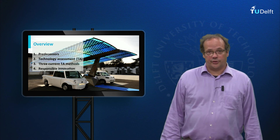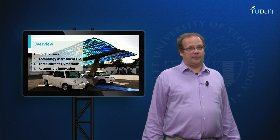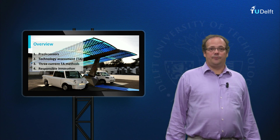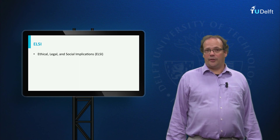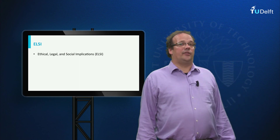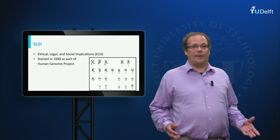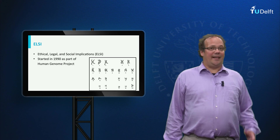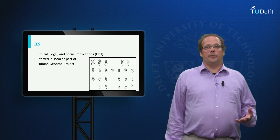There are two main forewarners of technology assessment: so-called ELSI and impact assessment. ELSI stands for Ethical, Legal and Social Implications. ELSI started in 1990 as a part of the program of the Human Genome Project. It was aimed at identifying the ethical, legal and social implications of the mapping of the human genome.